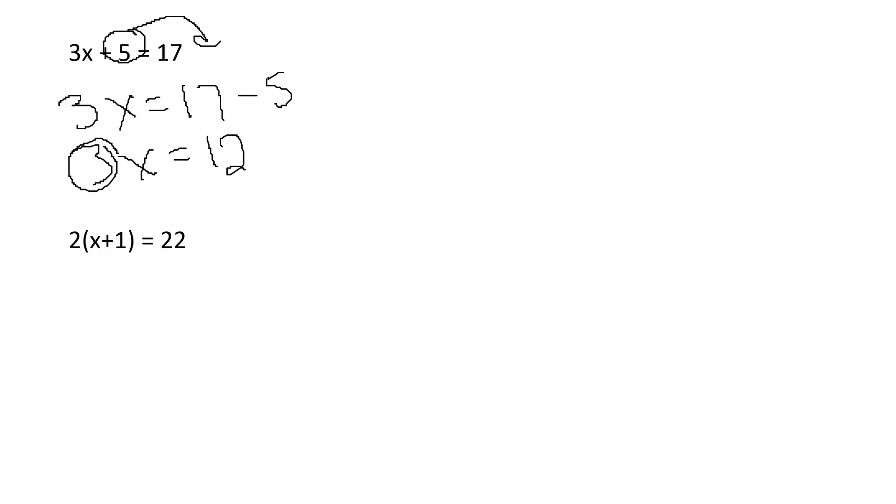Now I need to move my 3 over. When I move that over, the operation changes from multiplication to division. If it will simplify, I need to go ahead and simplify that out. 12 divided by 3 is 4. If it doesn't, just leave it as a fraction.